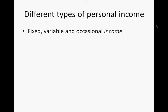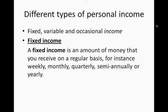You get fixed, variable, and occasional incomes. A fixed income is an amount of money that you receive on a regular basis.